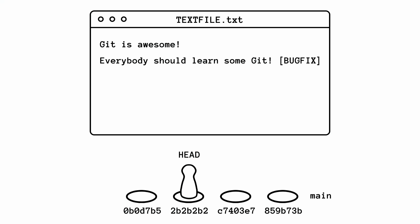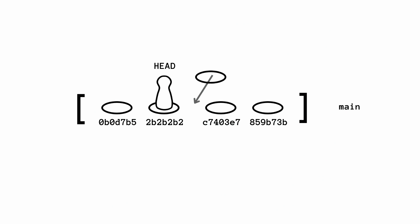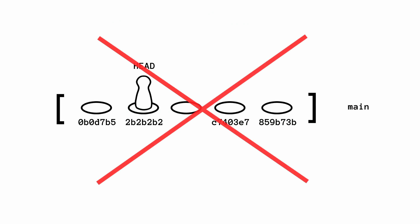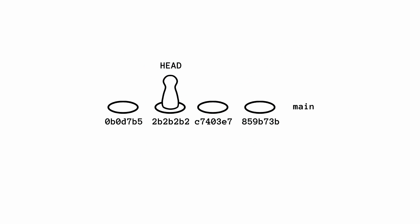What will happen if you commit this change? This is exactly where the right mental model becomes important. Let's say you imagine that a sequence of commits is like an array, so you can just insert a new commit at an index — that would be wrong. The right way to imagine it is as a commit chain.